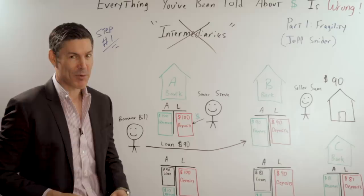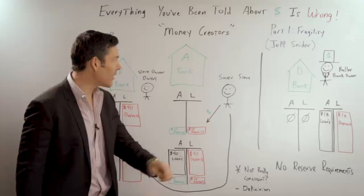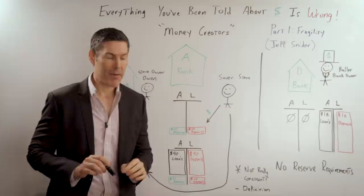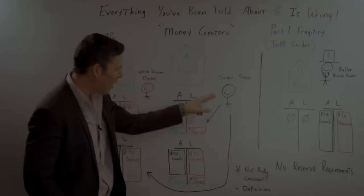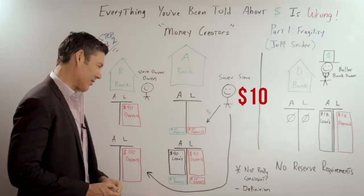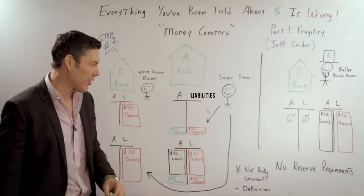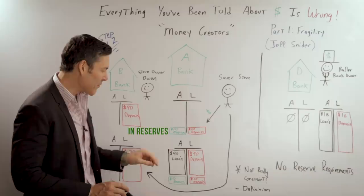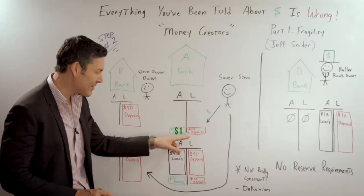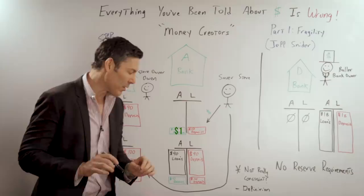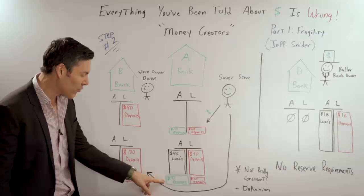Step number two, we've got to start looking at banks as money creators and not intermediaries. This is what I mean by that. Bank A and Saver Steve is back. But this time, instead of $100, he's only got about $10. So he deposits that into the bank that goes onto the liability side of their balance sheet. The asset side, they have $10 in reserves. Instead of them lending out $9 and having $1 in reserves against that $10 deposit, a 10% reserve requirement.